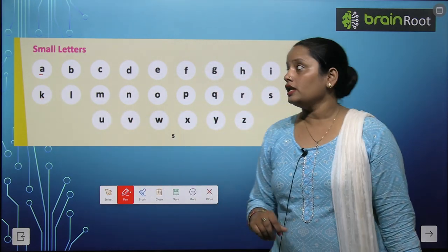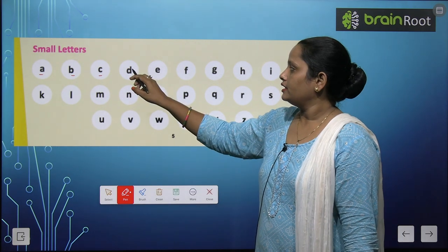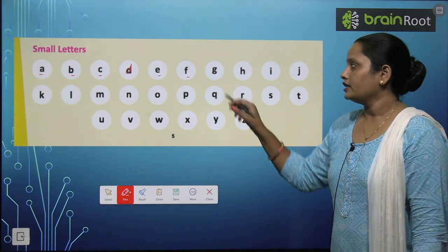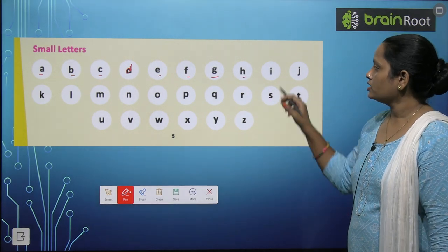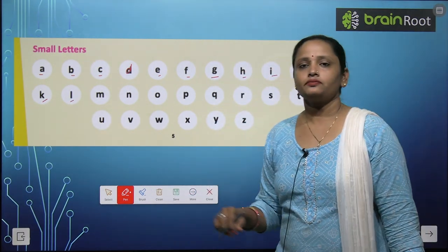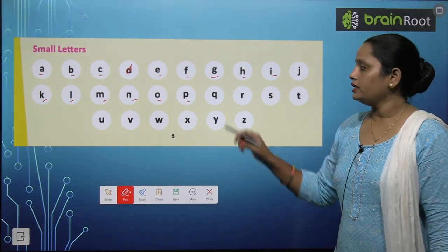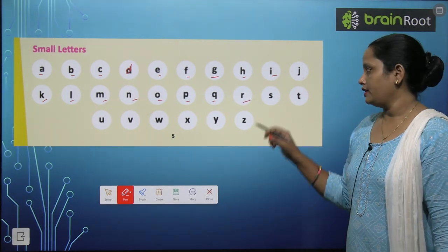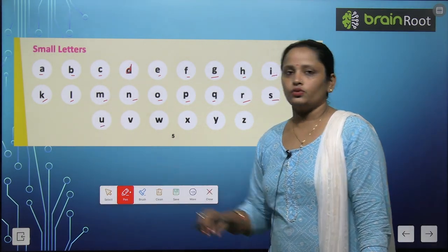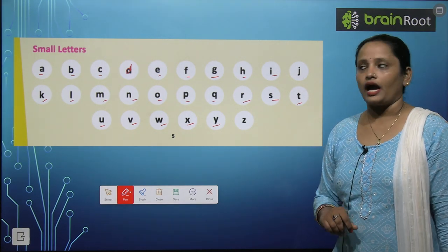This is small letter a, next b, next is c, d, e, f, g, h, i, j, k, l, m, n, o, p, q, r, s, t, u, v, w, x, y and z.